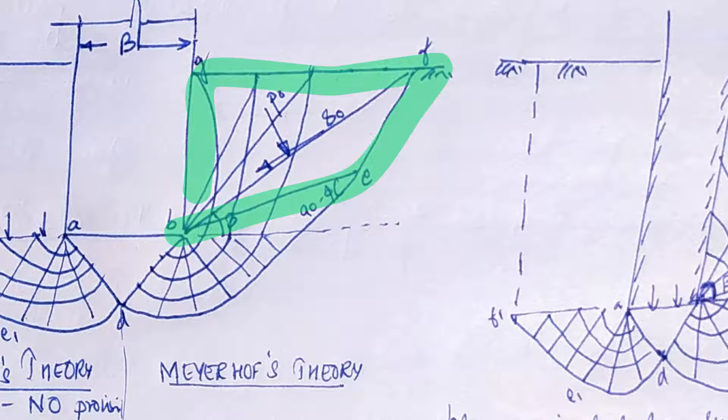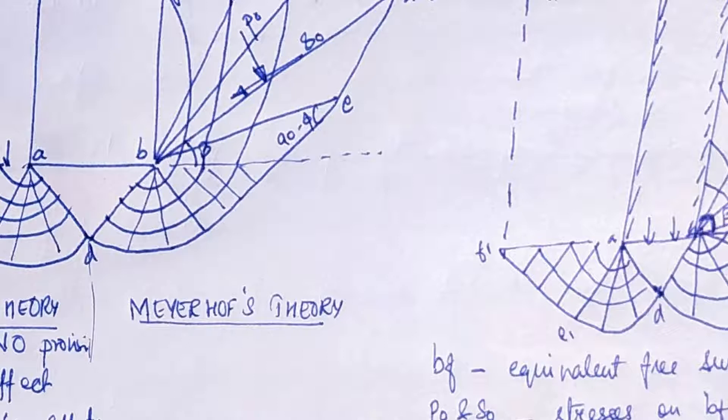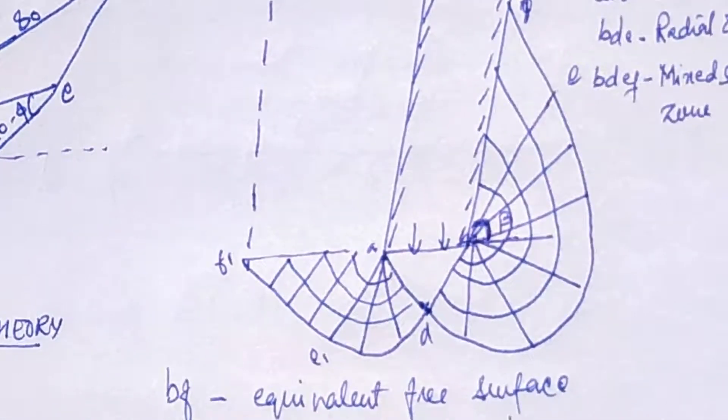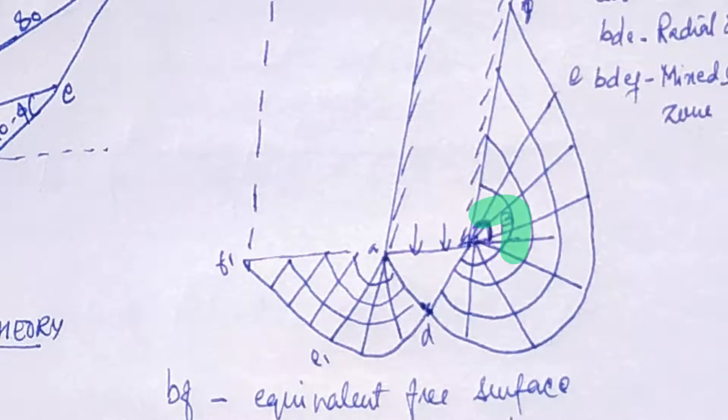The plastic equilibrium of these zones can be established from boundary conditions starting from foundation shaft. To simplify the analysis, Meyerhof introduced a term beta. Beta is the inclination of this line BEF, the equivalent free surface on which the stresses P0 and S0 act. In case of deep foundation, the angle beta increases with depth and becomes 90 degrees.